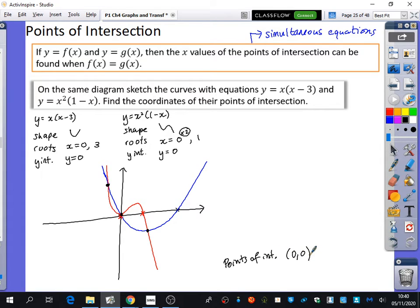How do you normally find out points of intersections on graphs? What do we do? Simultaneous equations. So we're going to solve these two equations simultaneously. We're going to solve this equation and this equation simultaneously. So I have got I'm going to make this and this equal to each other. In other words, x(x - 3) is equal to x²(1 - x). I'm going to try and solve this.